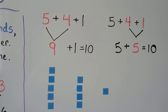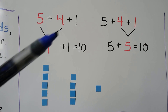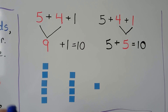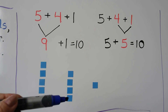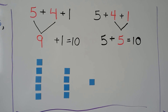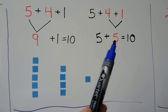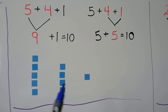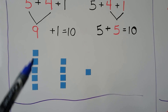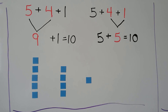If we want to add 5 plus 4 plus 1, we can add the 5 plus 4 first. That's 9. Then we can add the 1. That's 10. We can also add the 4 plus 1 first — that equals 5. Then we can add the other 5. That's the same sum.